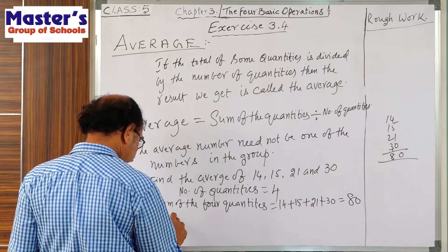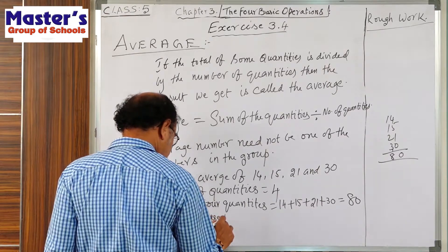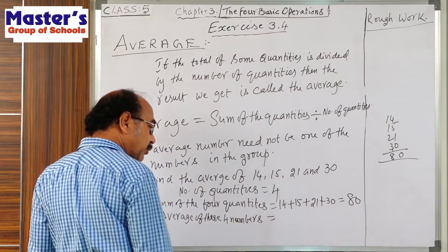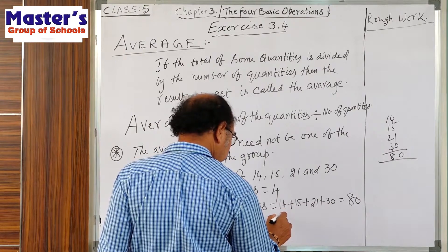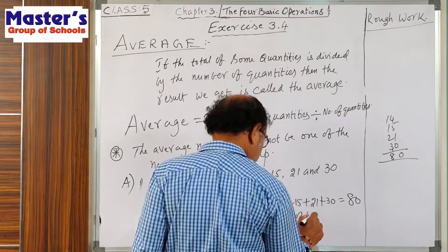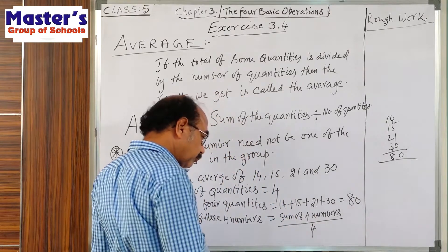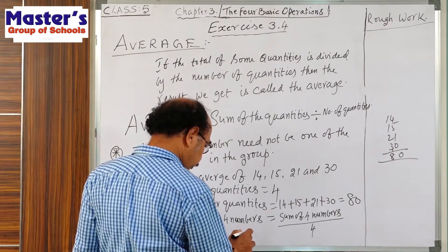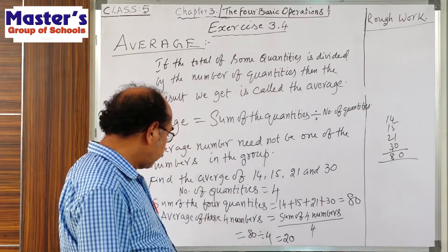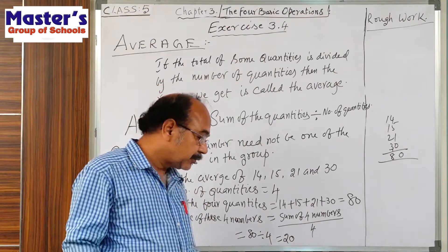Therefore, the average of these four numbers is equal to the sum divided by four. The total of the four numbers is 80. So 80 divided by 4 equals 20. Therefore, the average of the four numbers is 20.